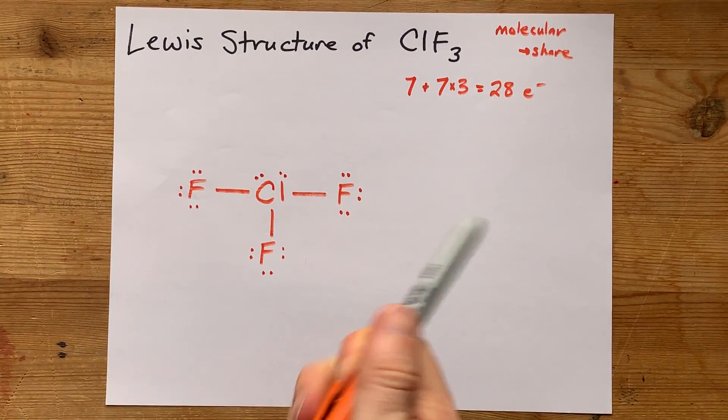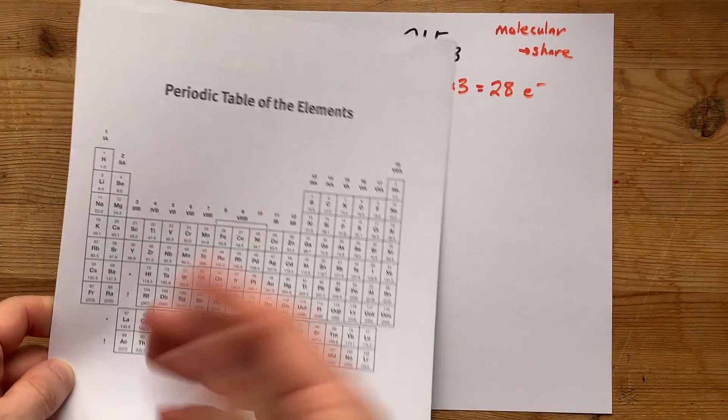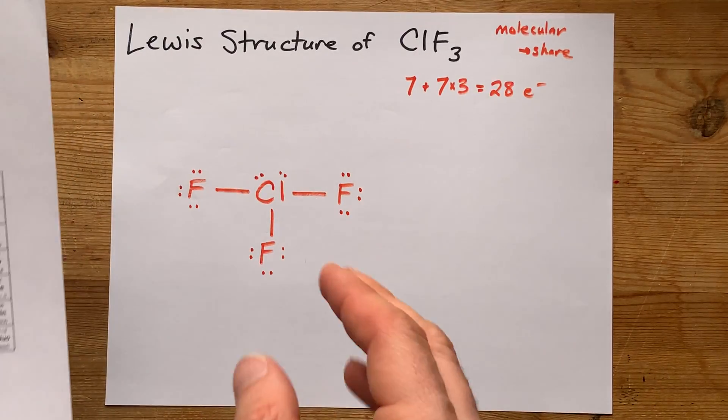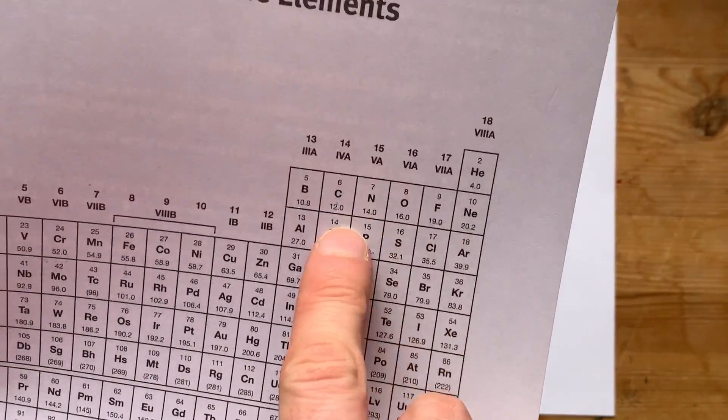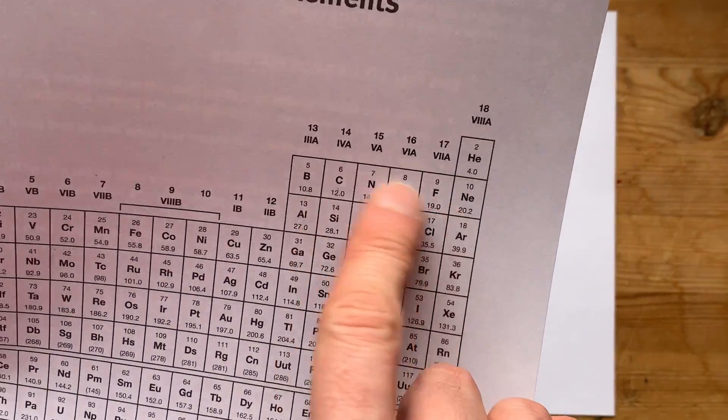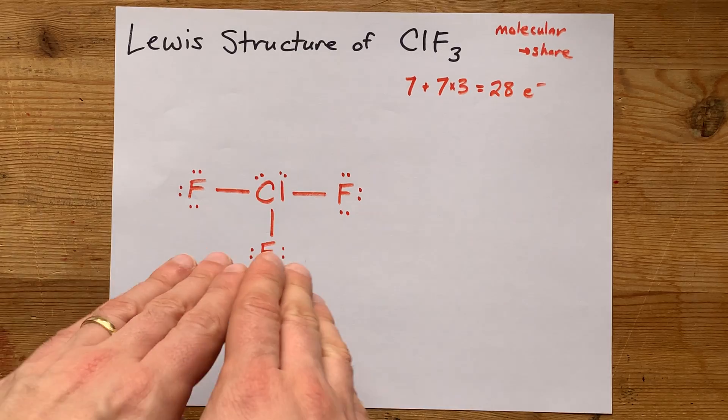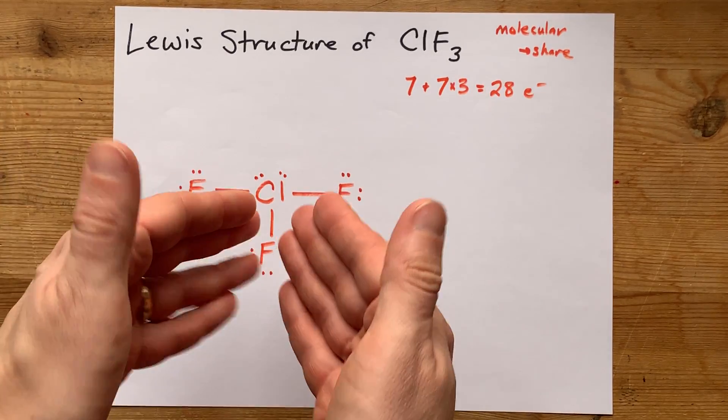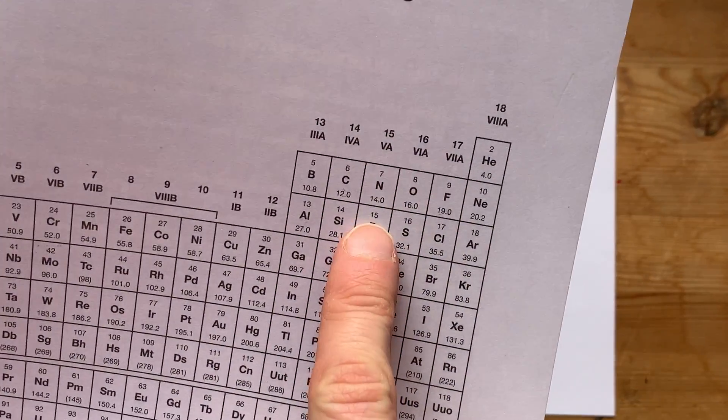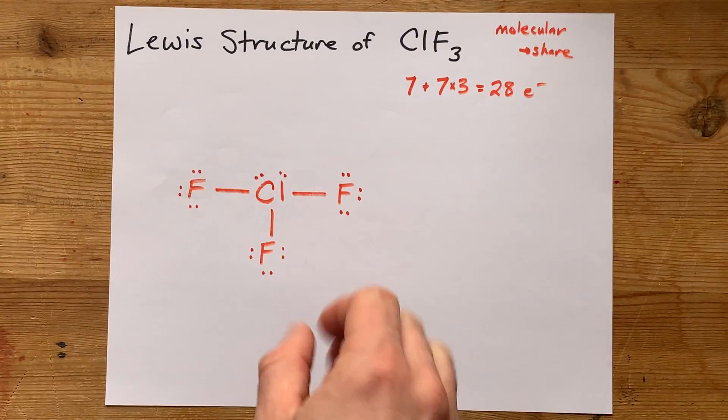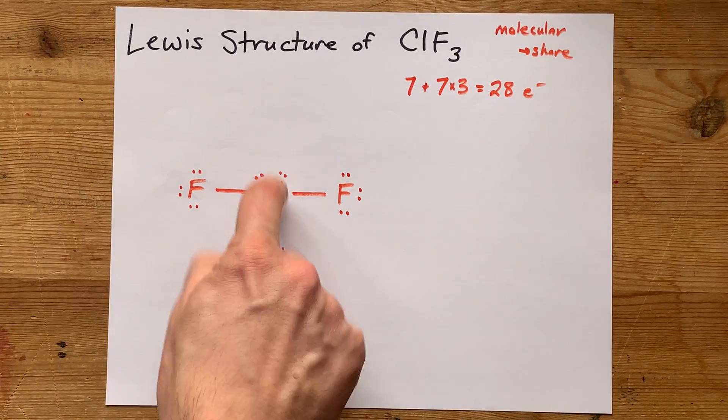Now you may argue that this violates the octet rule for chlorine, and you're technically correct. But the only atoms that I see always satisfying the octet rule are carbon, nitrogen, oxygen, and fluorine, and also silicon. Those are the only five that I really ever actually care about the octet rule for. Chlorine is allowed to have an expanded octet, is what I'm trying to say there. Basically, from phosphorus onward on the periodic table, all of those atoms can have an expanded octet, and this is one example like that. So yes, this is allowed.